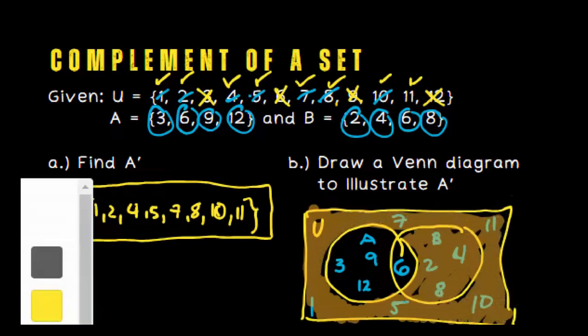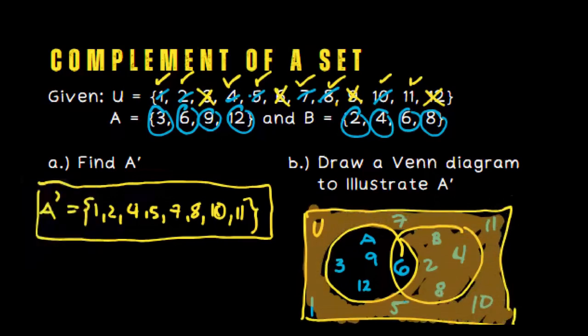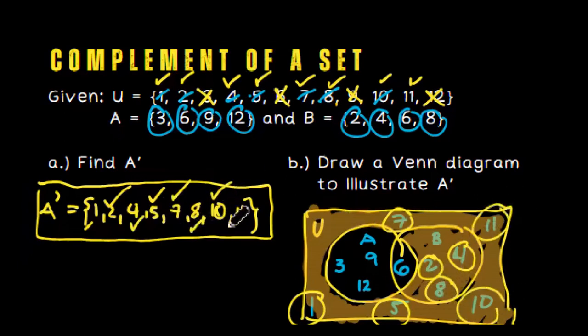And that is the given illustration. Let's double-check with our answer for complement of set A. We included 1, 5, 7, 2, 4, 8, 10, and 11. That's how we visualize the complement of a given set.